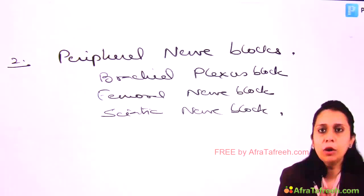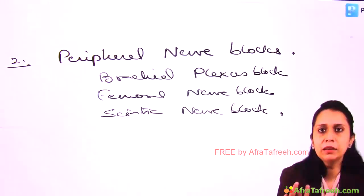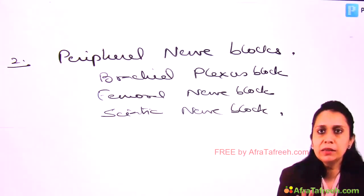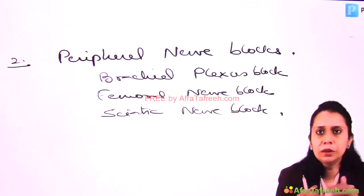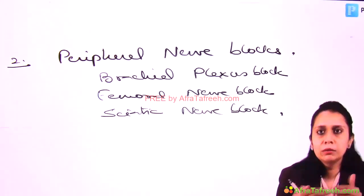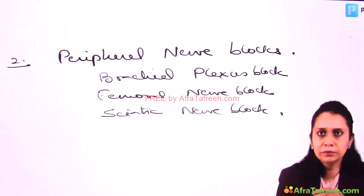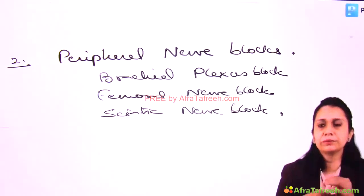So to summarize: I talked about General Anesthesia — its components, how it is given — and about Regional Anesthesia and its different types. All the related drugs, equipment, etc., will be discussed in upcoming chapters. This was just the introduction of Anesthesia. Thank you.